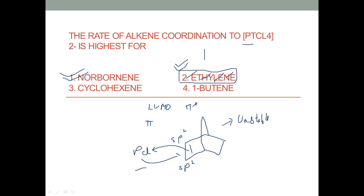When back-donation occurs, the C–C bond length increases and these sp2 hybridized carbons attain sp3 character. As they go from sp2 to sp3 character, the ring strain present in norbornadiene is released. Once the ring strain is released, the molecule becomes more stable, which is why the rate of coordination for norbornadiene is much higher.